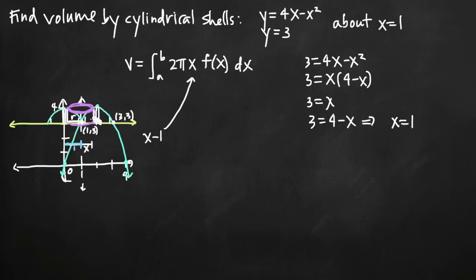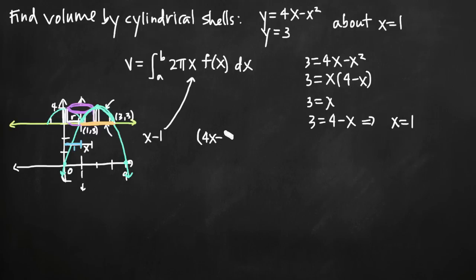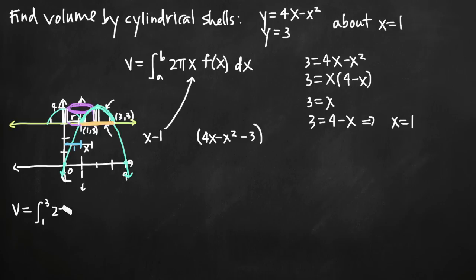The function f of x represents the height of our approximating cylinder, which is just the upper curve minus the lower curve. In our case, the upper curve is 4x minus x squared — since the parabola is above the line y equals 3 — and the lower curve is 3. So f of x equals 4x minus x squared minus 3. Now we can plug everything into our volume formula: the integral from 1 to 3 of 2pi times (x minus 1) times (4x minus x squared minus 3) dx.